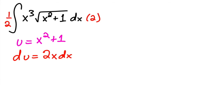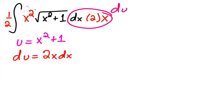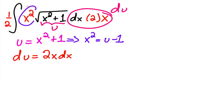You need a 2 here, so put 1/2 on the outside. You have x³ — borrow one of those x's. Move one x over, turning x³ into x²·(2x dx). This 2x dx equals du. Now you need to get rid of the remaining x². Since u = x² + 1, solving gives x² = u − 1. So x² is simply u − 1.